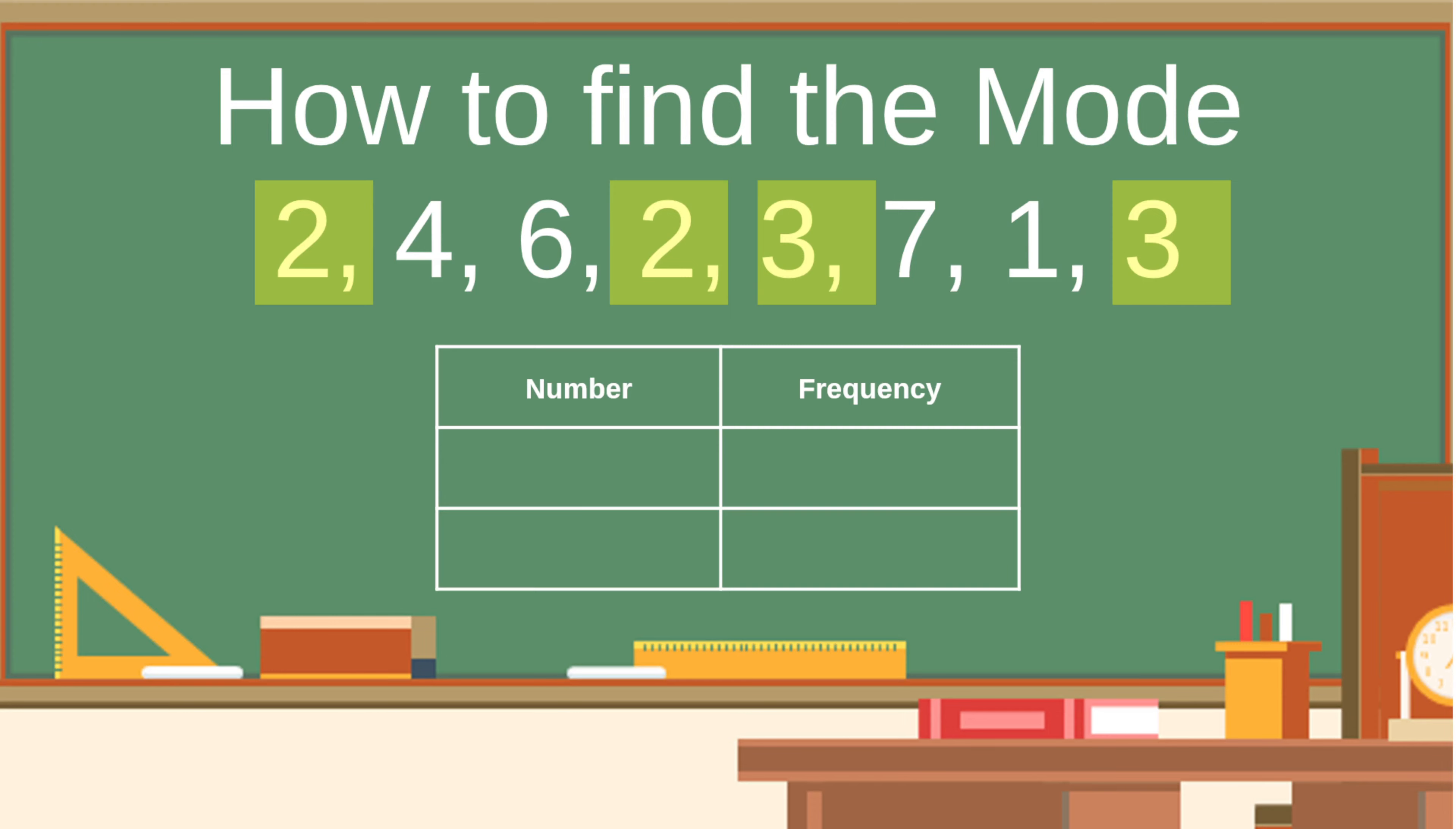Even though it's a small set, we can still make a quick table. Our repeating numbers are two and three. The two occurs twice and the three occurs twice.